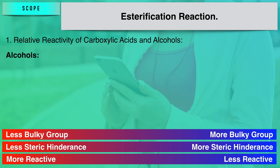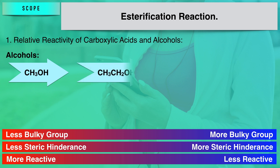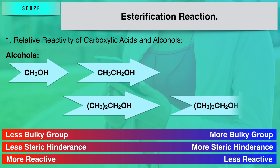Similarly, you can consider the same for alcohols. In case of alcohols, if you have a methyl group, steric hindrance is minimum so esterification proceeds very smoothly and the rate is high. However, as the size goes on increasing — from ethyl group to isopropyl group to tertiary butyl group — the number of substituents around the group increases, steric hindrance increases, and the rate of reaction slows down. That is about the relative reactivity of carboxylic acids and alcohols in esterification.